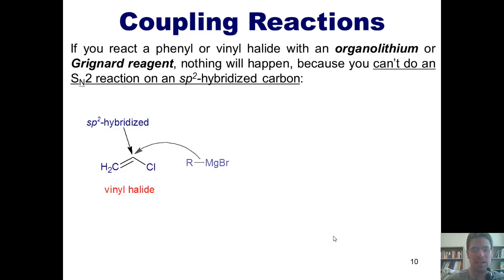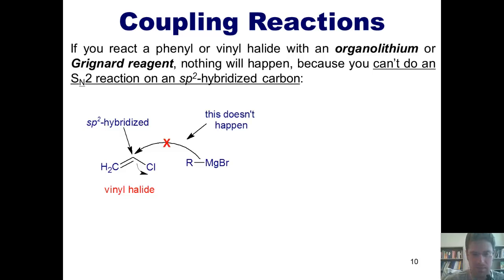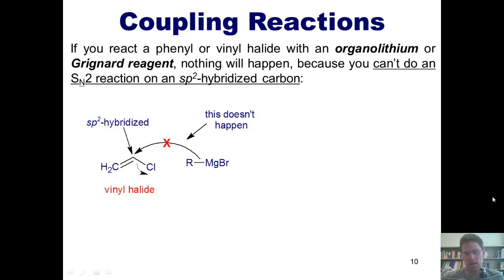Now if I react that with an organolithium or a Grignard reagent, you might try to imagine that I've got a negative charge on the carbon bonded to the magnesium, and it's going to come in, form a bond with this carbon, and then kick off the chlorine. Wrong — this does not happen. The reason is because you can't have a nucleophile come in and form a bond with an sp2 hybridized carbon while kicking off a halide. It just doesn't work.